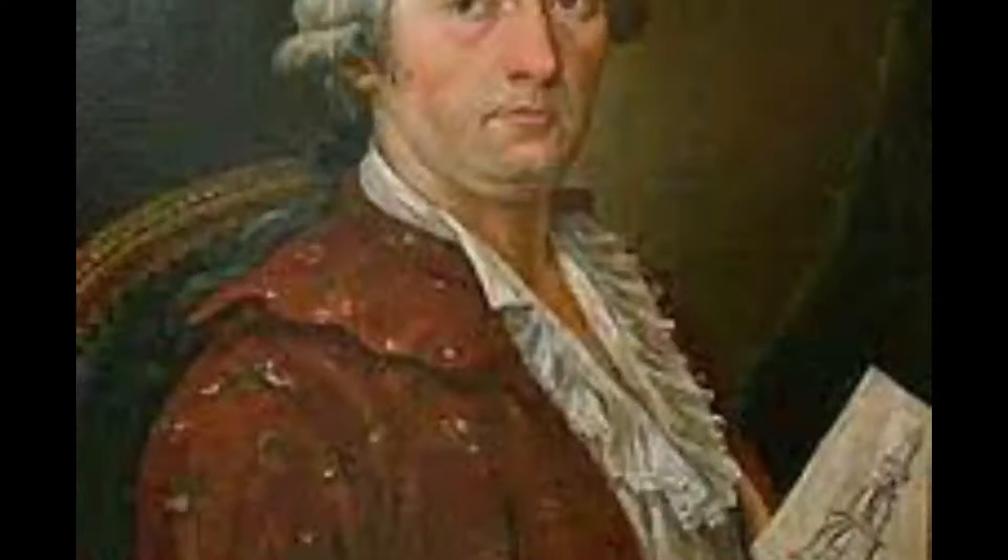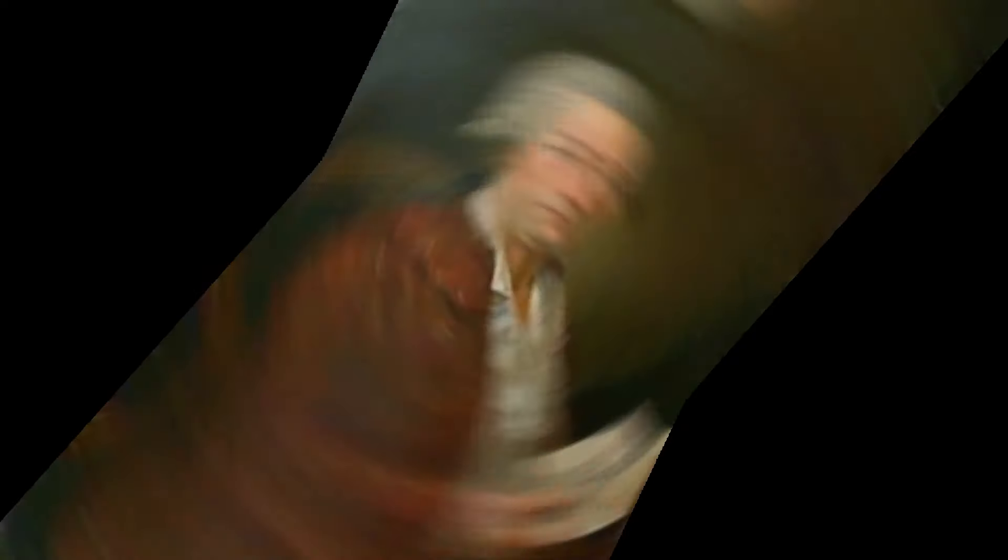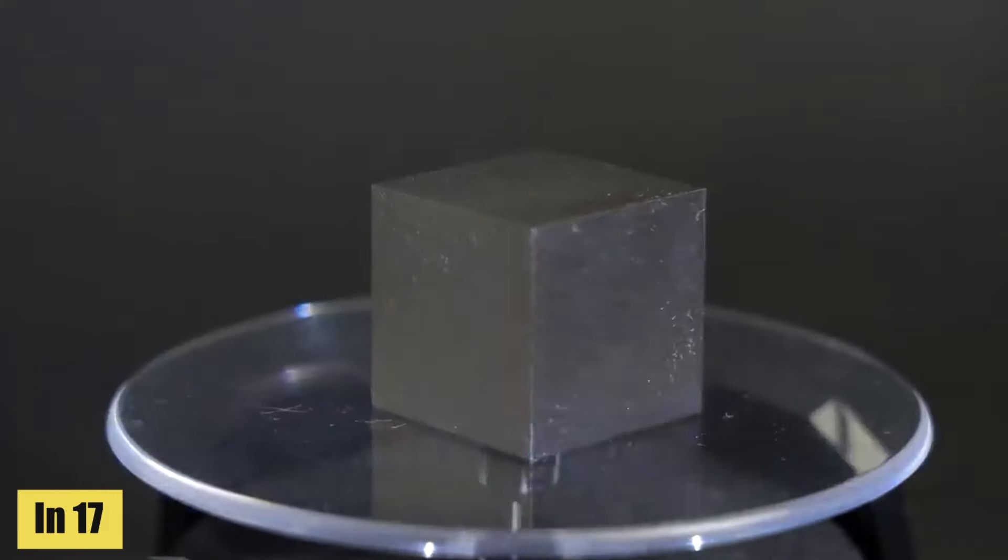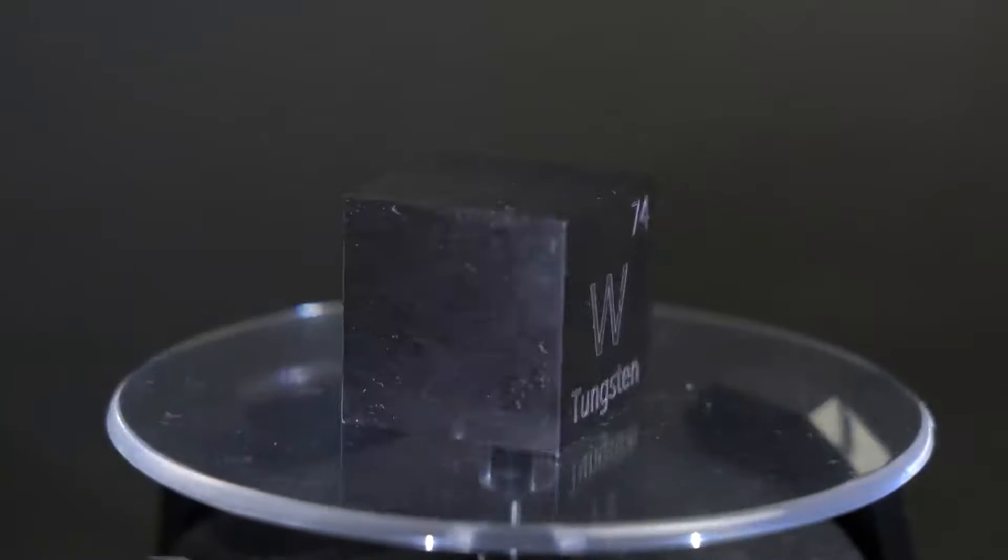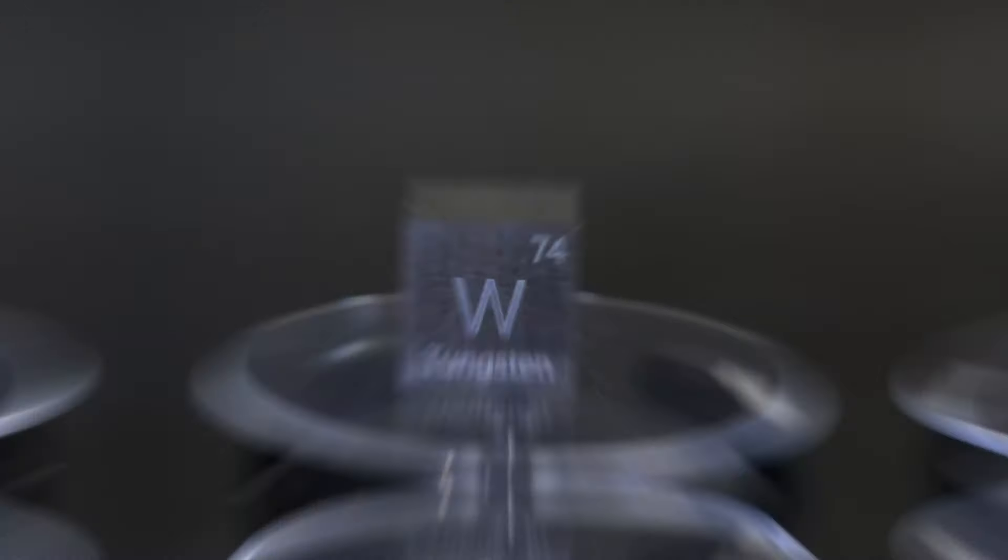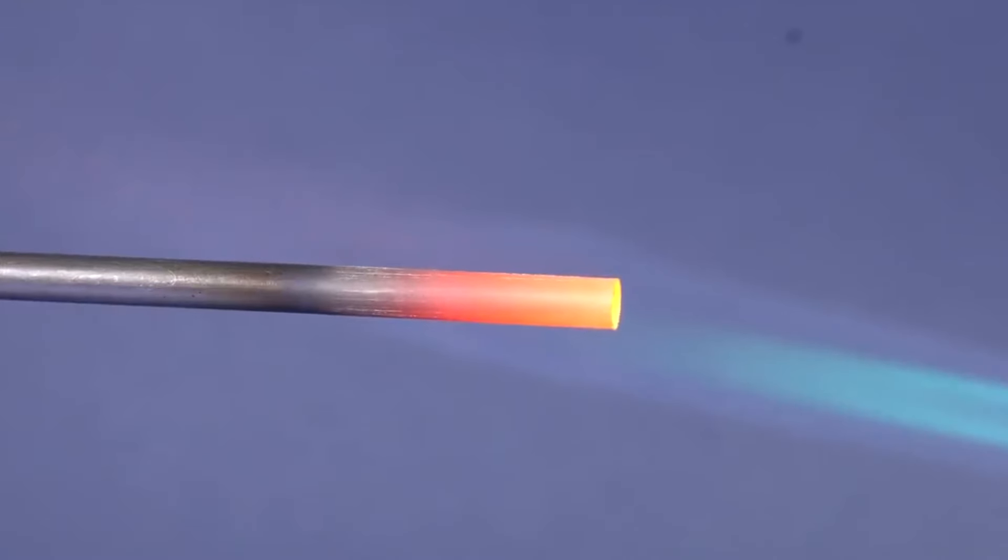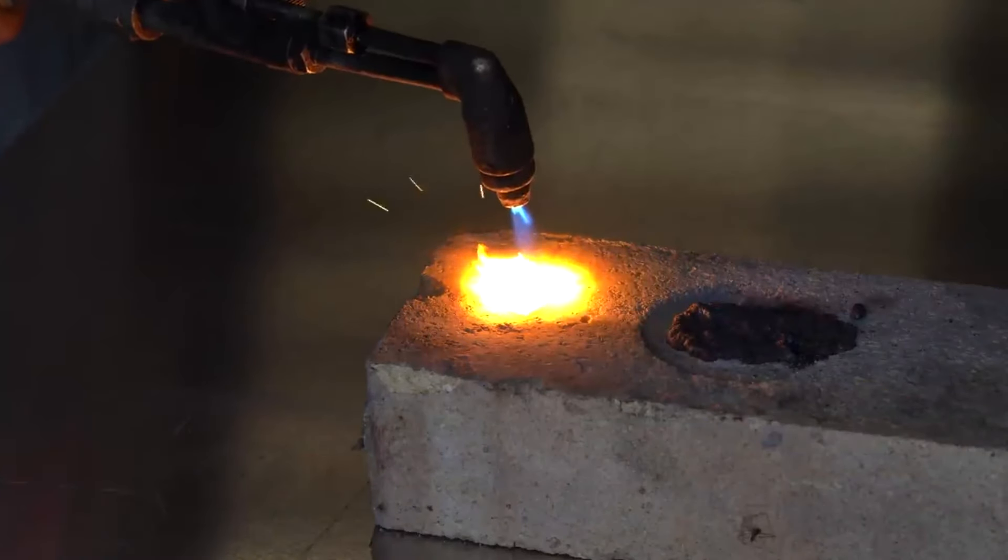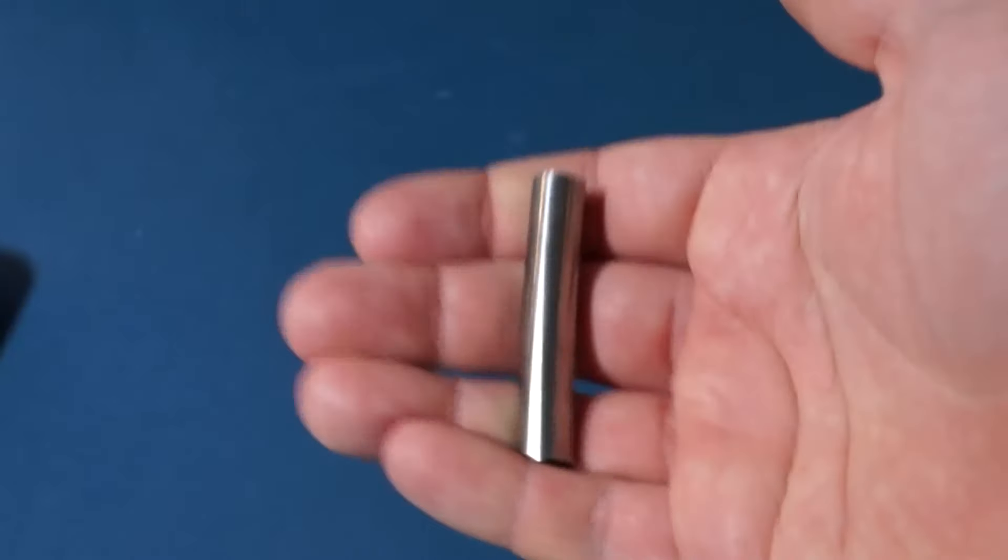The credit for the discovery of tungsten goes to Swedish chemist Carl Wilhelm Scheele and Spanish chemists Jose and Fausto Elhuyar. In 1781, Scheele and the Elhuyar brothers independently isolated tungsten as a new element, unveiling its unique properties and potential applications. Their groundbreaking work laid the foundation for further research and utilization of tungsten in various industries.